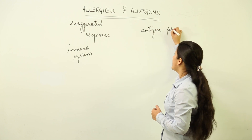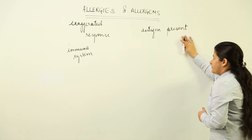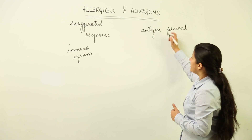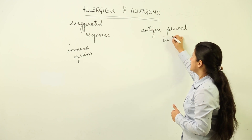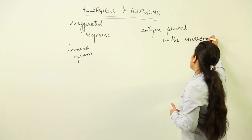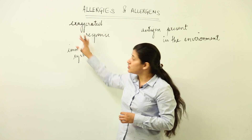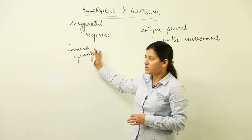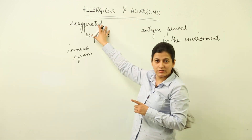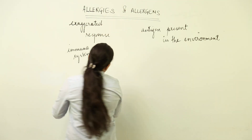Now, what is an allergen? An allergen is an antigen that is present in the environment. So if we are asked about the definition of allergies and allergens: an antigen present in the environment which has the capability to trigger an exaggerated response of the immune system is known as an allergen, and that triggered response is called allergy.